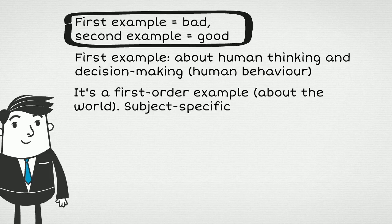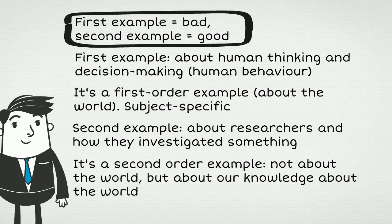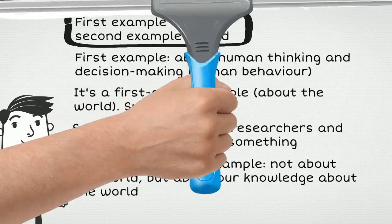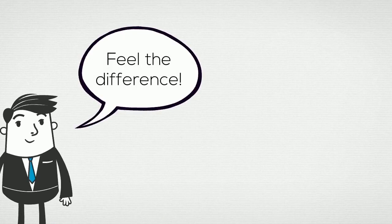The second example is about researchers and how they investigated something. It is focused on answering the how do we know what we know question. It is not about human decision making, it is about our knowledge of human decision making. This makes it a second-order example. Not an example about the world, but an example about our knowledge about the world. You really need to feel the difference in order to make sure that what you are writing in your essay is actually TOK.